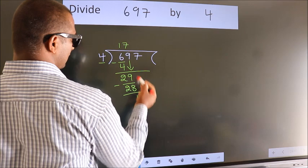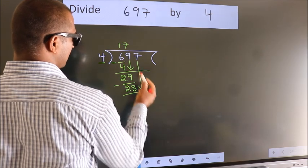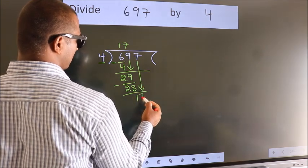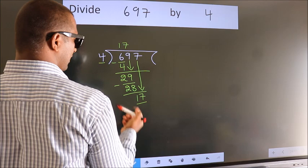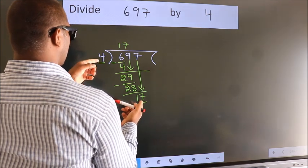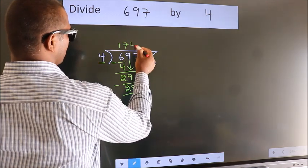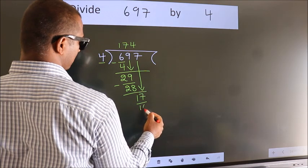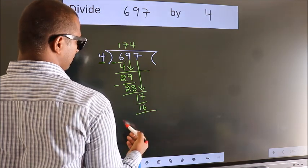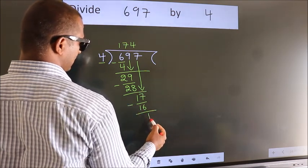After this, bring down the beside number, so 7 down, so 17. A number close to 17 in 4 table is 4 fours, 16. Now we subtract, we get 1.